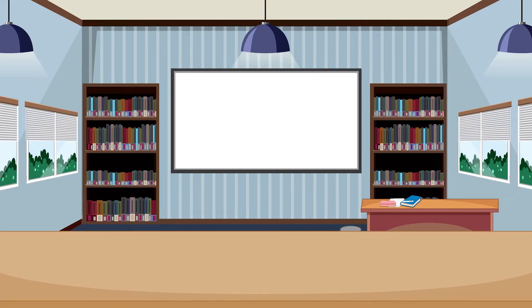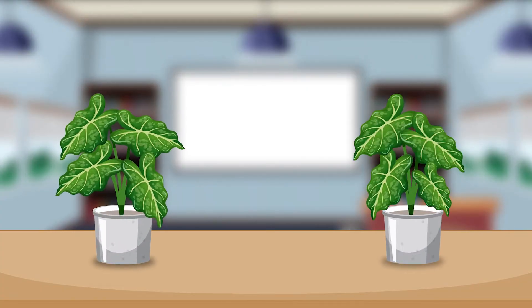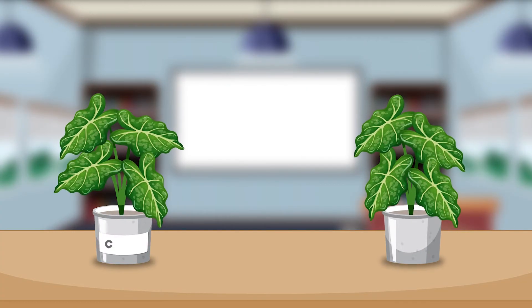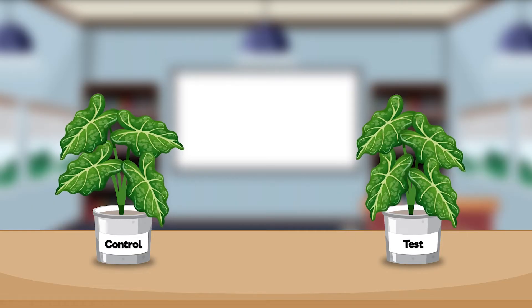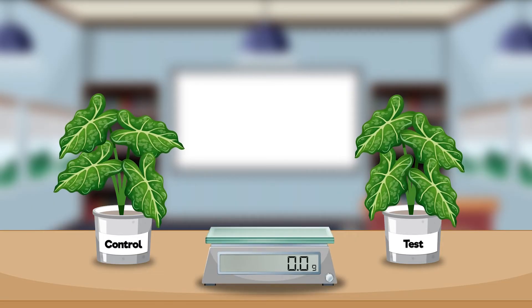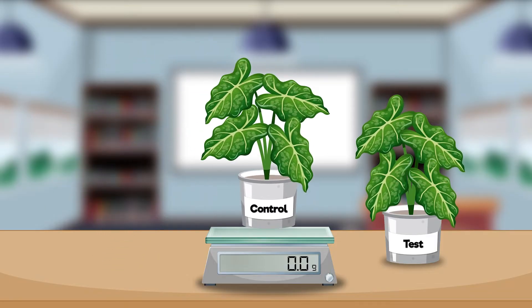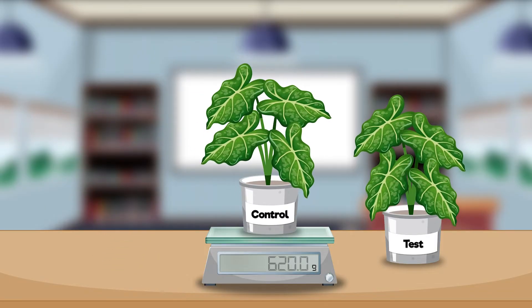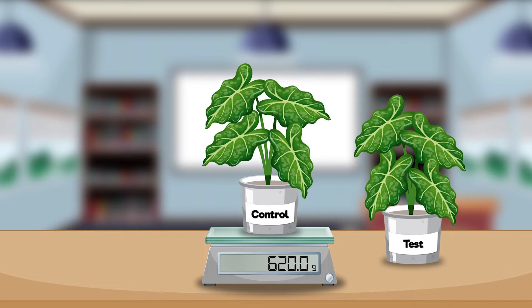A good way to address this misconception in class is through a simple experiment. Select two plants of the same species and similar size. Label one as the control plant and the other as the test plant. Weigh each plant, including the pot and soil, using a precise scale and record their initial weights.